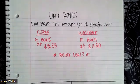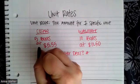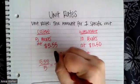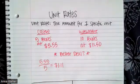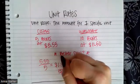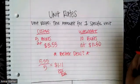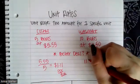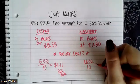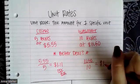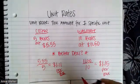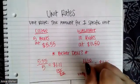For the Costco deal we have $5.55 divided by 5, that is equivalent to $1.11 per box. At Walmart we're going to take $11.50 and divide it by 10, and this is equivalent to $1.15 per box. These are what's known as the unit rate.